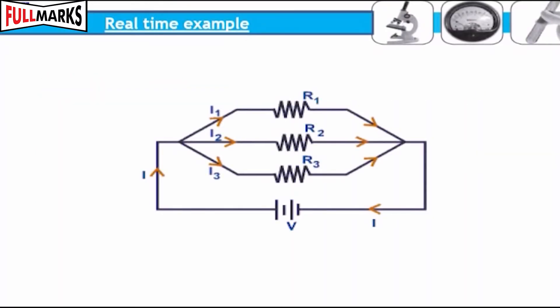Real time example: Current is constant in series circuit. Hence we cannot connect bulb and room heater in series because their current requirement is different. Hence such devices are connected in parallel so that the current is divided through the different electrical gadgets.